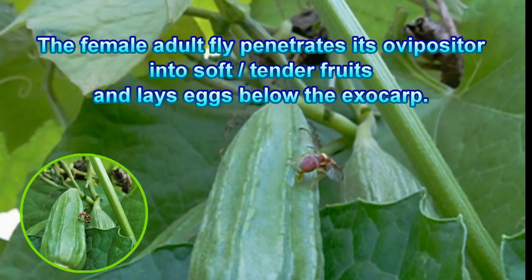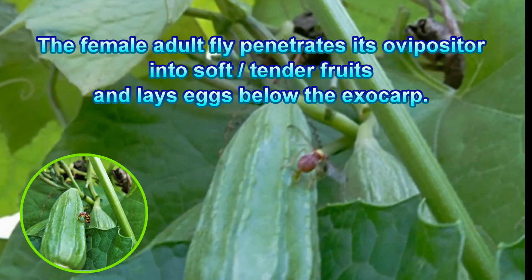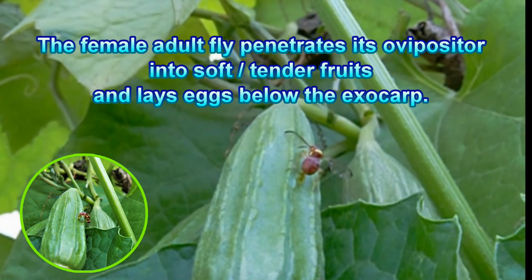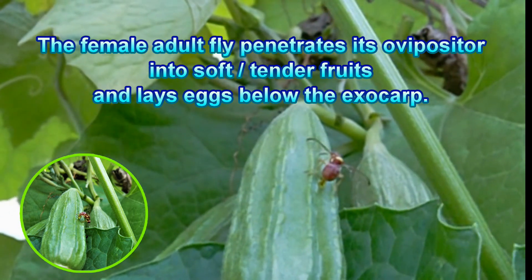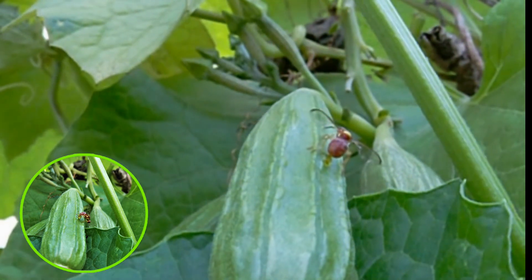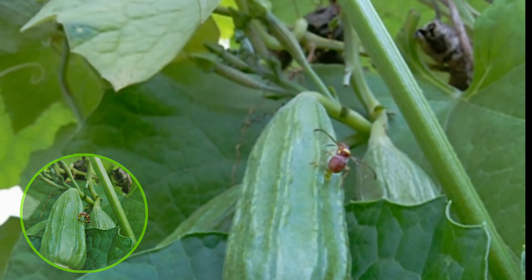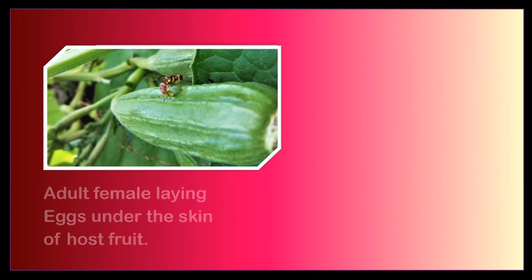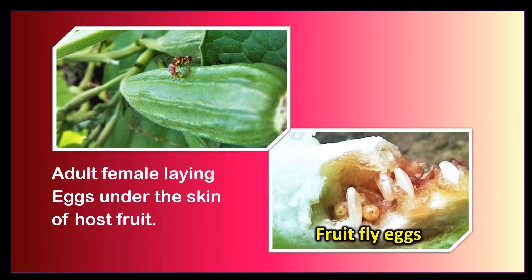The female adult fly penetrates its ovipositor into soft or tender fruits and lays eggs below the exocarp. This shows the adult female laying eggs under the skin of the host fruit.